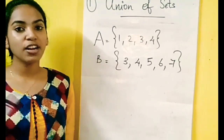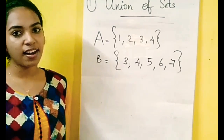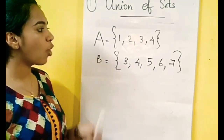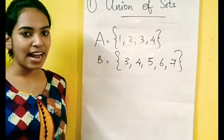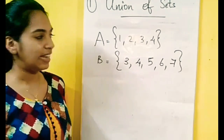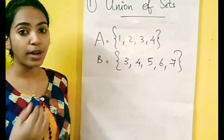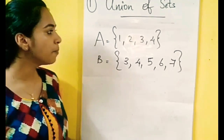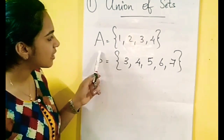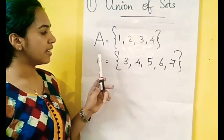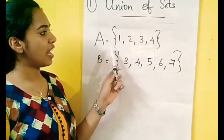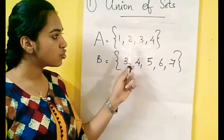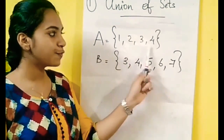Now, we have two sets. We have the same sets. This is an example — how to write a set. You can write the elements. The elements are 1, 2, 3, 4.